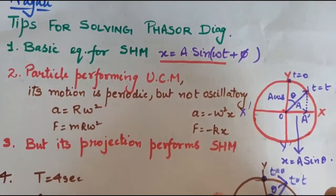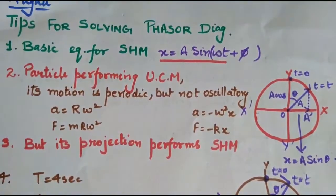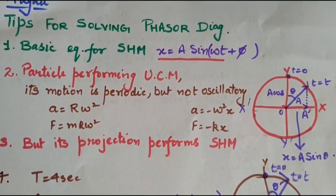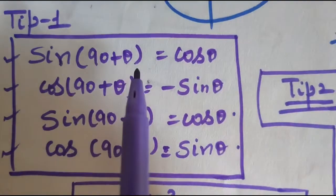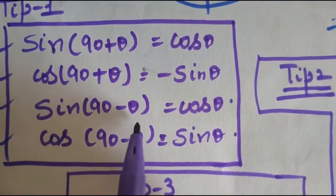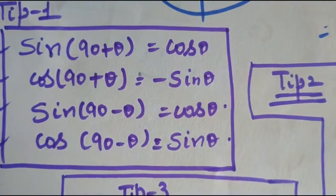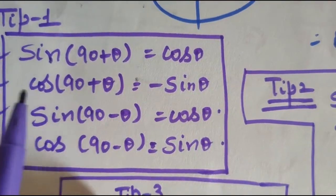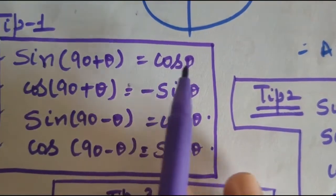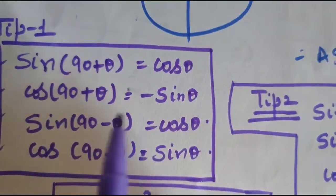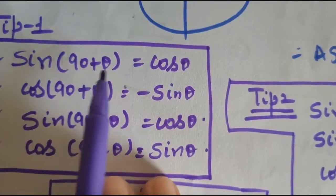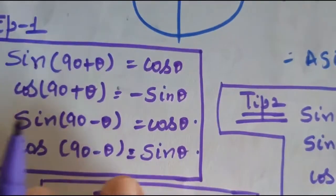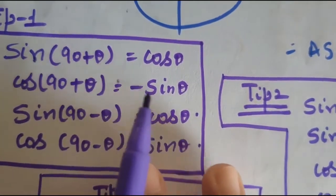Tip number one: before solving the numericals, you must be very well aware of the trigonometric ratios. The four most frequently used are sin(90° + θ), cos(90° + θ), sin(90° − θ), and cos(90° − θ). If you see carefully, writing sin(90° +) or cos(90° +) causes a change to their co-ratio. Similarly, sin(270° + θ) and cos(270° + θ) also change to their co-ratio with a sign change.